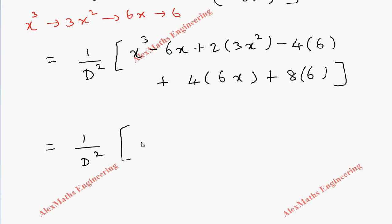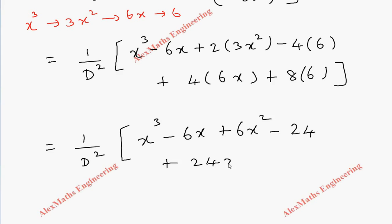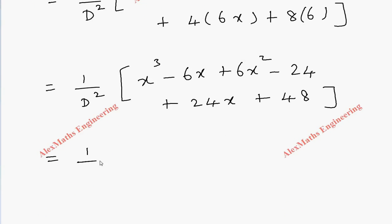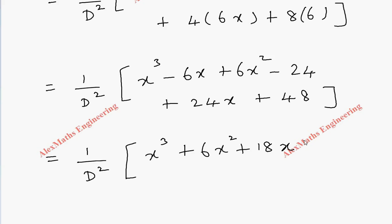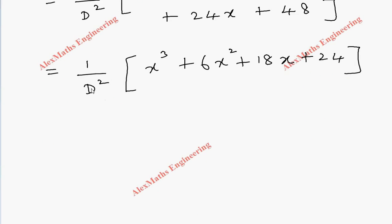Collecting all terms inside (1/D²), we have: x³ - 6x + 6x² - 24 + 24x + 48, which simplifies to x³ + 6x² + 18x + 24. The operator 1/D² stands for double integration.